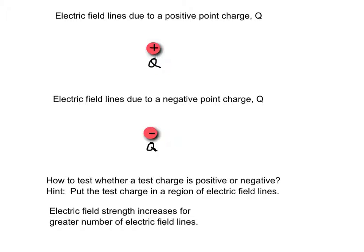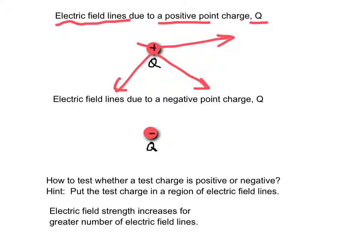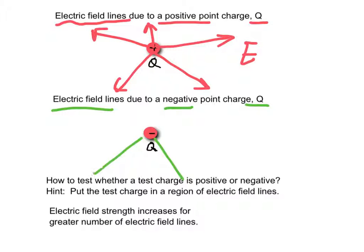Therefore, electric field lines due to a positive point charge Q will be radially outward from Q. On the other hand, electric field lines due to a negative point charge Q are radially inward towards Q.